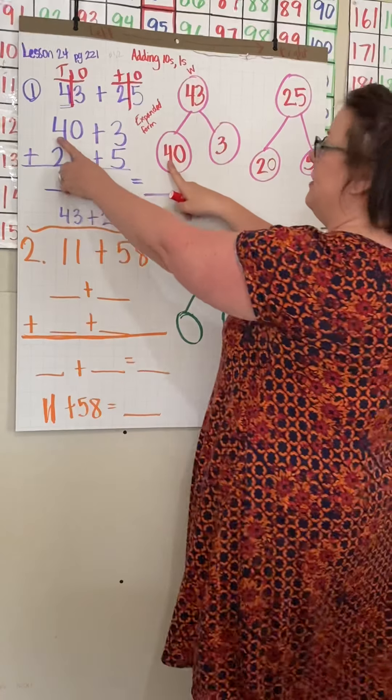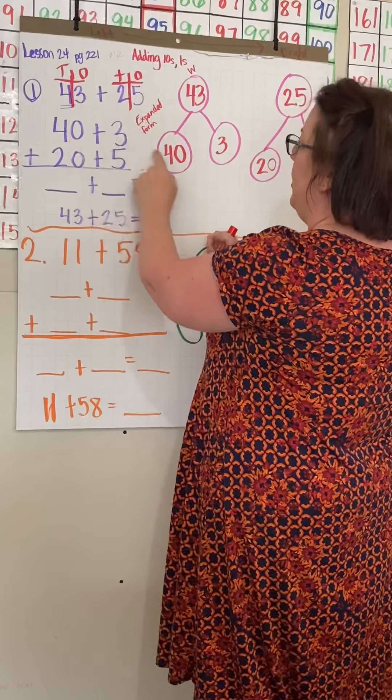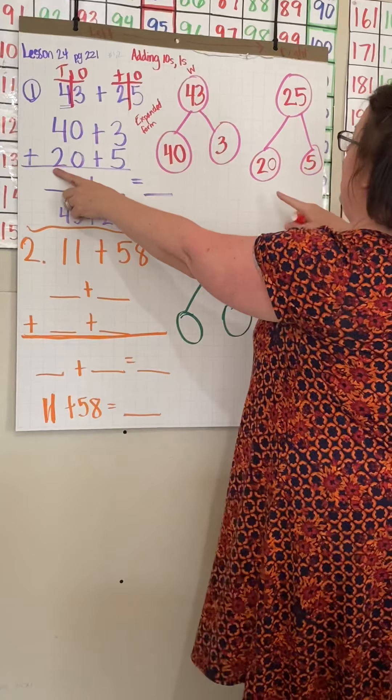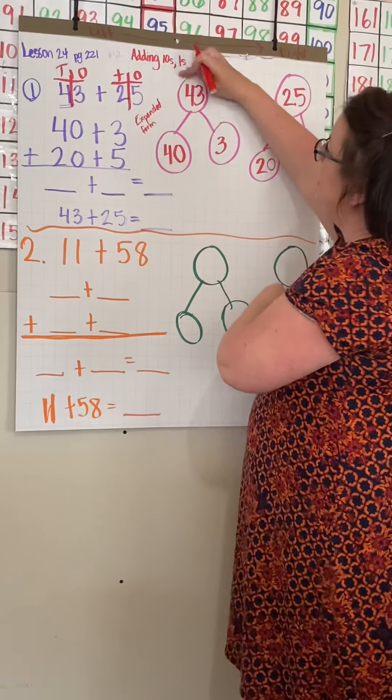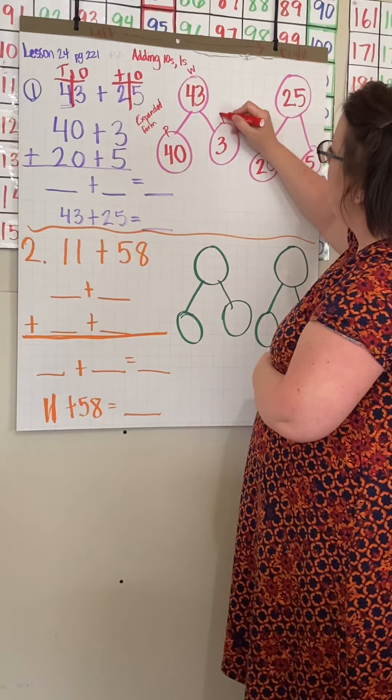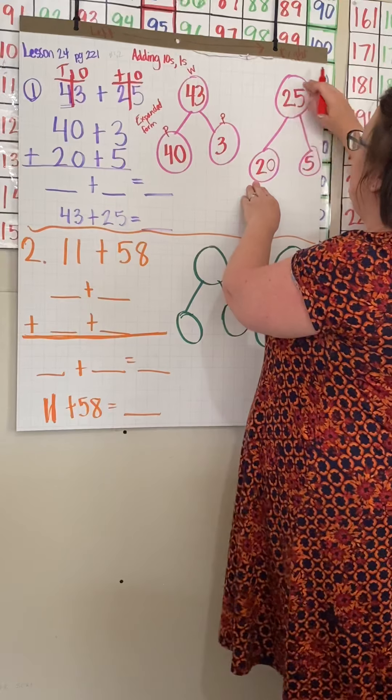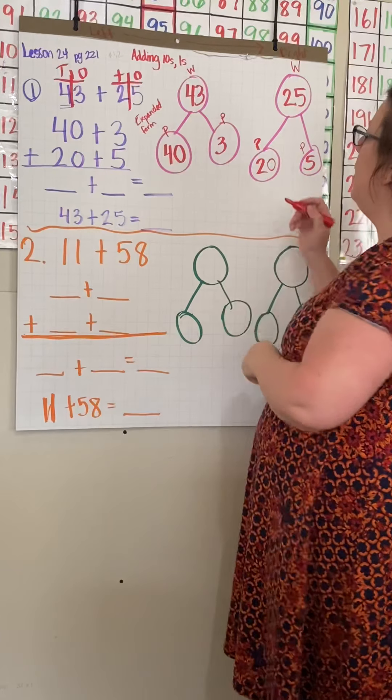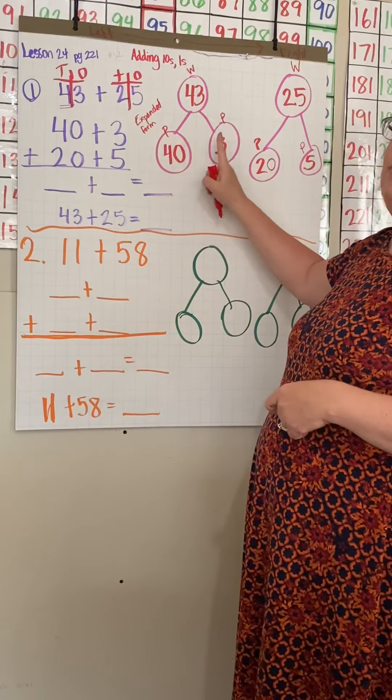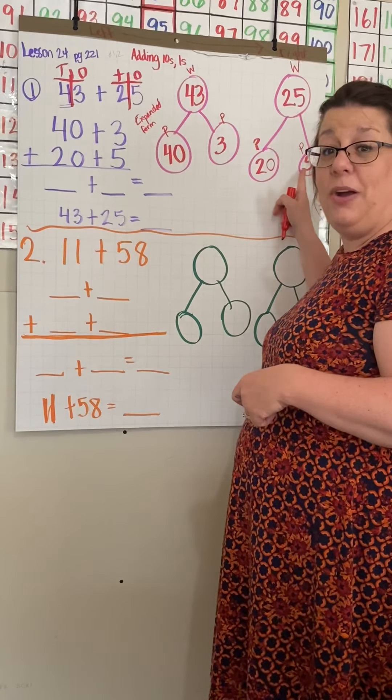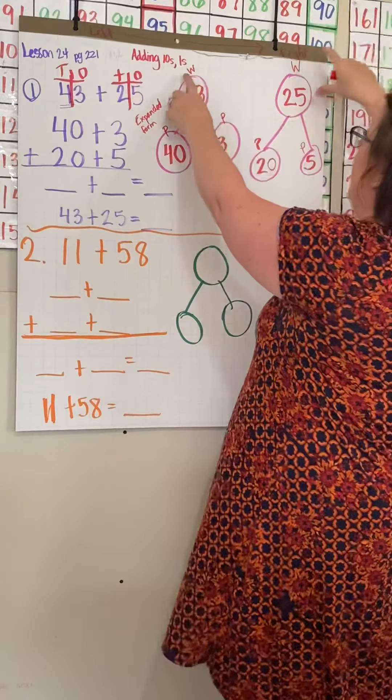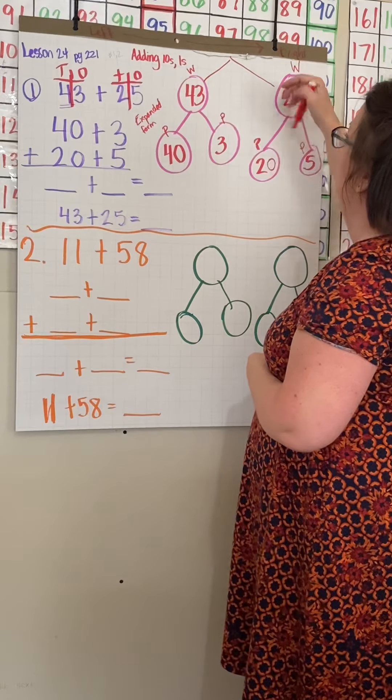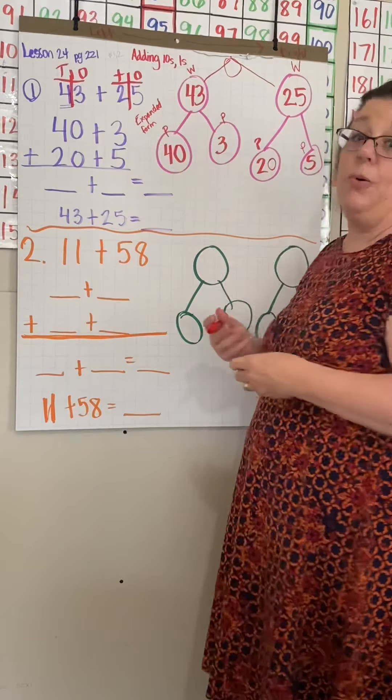So this looks similar, right? Here I have 40 and here I have 40. Here I have three. So it's just a different way of looking at it in extended form. Here I have 20 and five. So this is my whole. 40 is my part and three is my part. 25 is my whole. 20 is my part and five is my part.